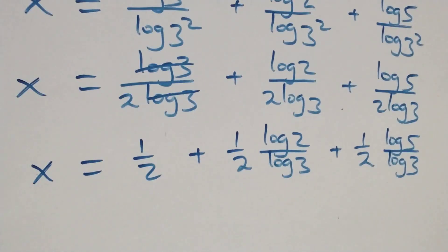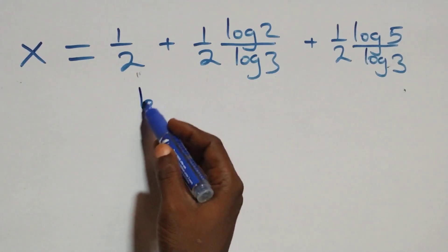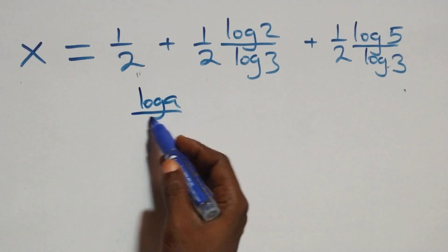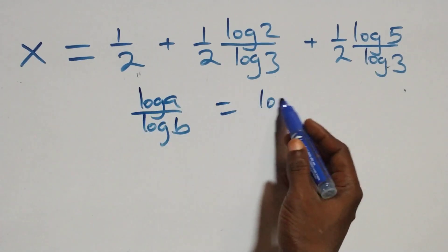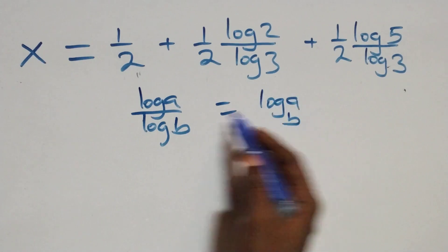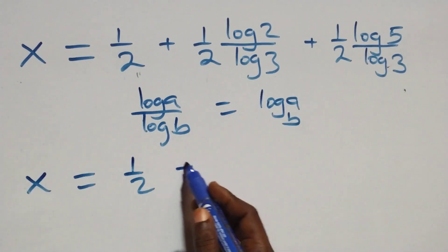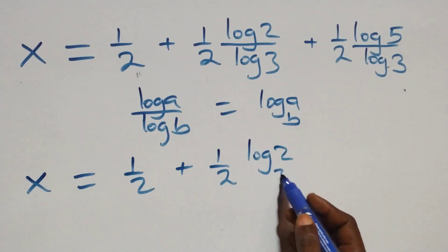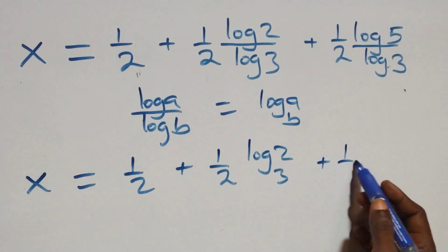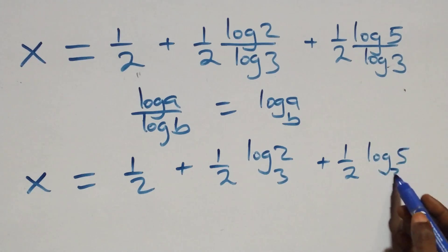Next step, we apply the change of base formula: when we have log A over log B, this is the same thing as log A to base B. So all we have becomes x equals to 1 over 2 plus 1 over 2 times log 2 base 3 plus 1 over 2 times log 5 base 3.